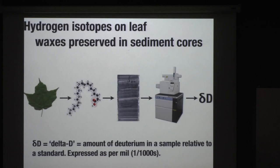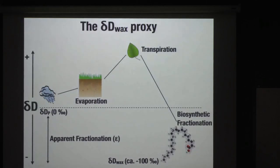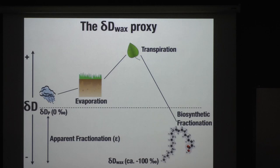Today we're going to focus mostly on hydrogen. These hydrocarbons have a lot of hydrogen, and it turns out that the deuterium content of these leaf waxes ultimately reflects the deuterium content of rainfall on the landscape — the water that the plants use to make the waxes. Getting from A to B is a little more complicated, so I'll step you through a couple of steps. Starting in the tropics, we've got rainfall somewhere around zero per mil freshly evaporated off the ocean. It falls on land. As it's in the soil, there may be some enrichment in the heavy isotope as you lose the light isotope to evaporation.